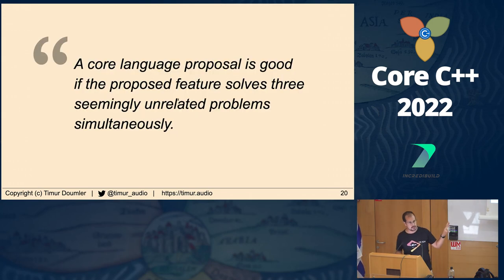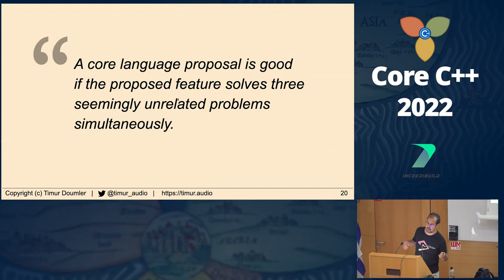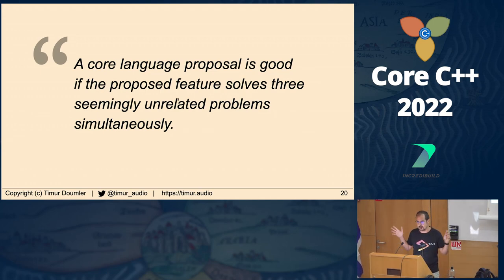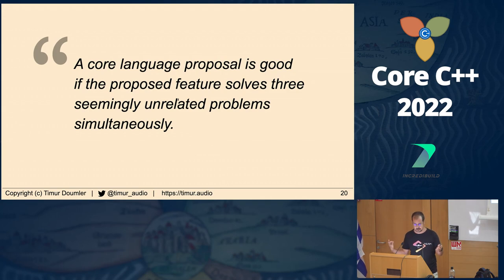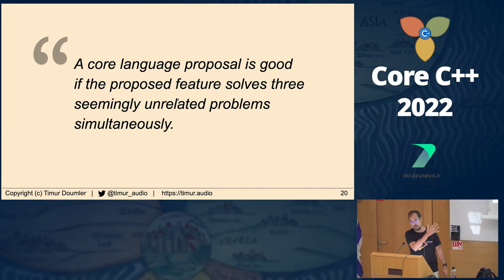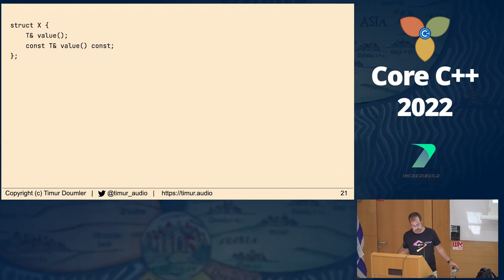There's a quote — I think it was Bjarne, but I'm not 100% sure — about when a proposal is good enough to put into the standard, which affects millions of C++ developers worldwide. One criterion, not official but often cited, is that a proposal is a really good feature if it solves three seemingly unrelated problems at the same time. I think that's a cool property for a new language feature, and deducing this is one of those — it does exactly this.